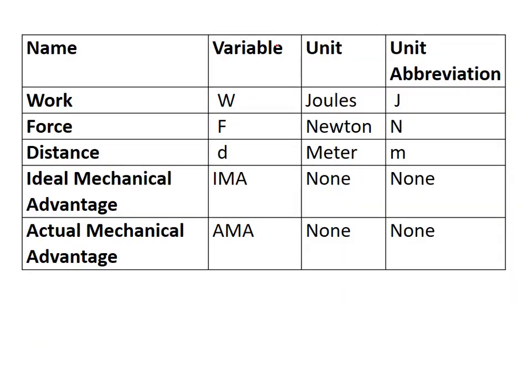Some of the variables we've seen before — nothing really new except for ideal mechanical advantage and actual mechanical advantage. They're not going to have a unit. You have work in joules, force in newtons, and distance in meters, like we've used before.